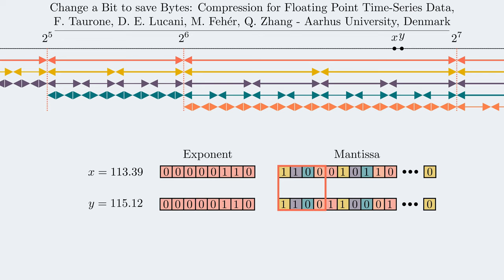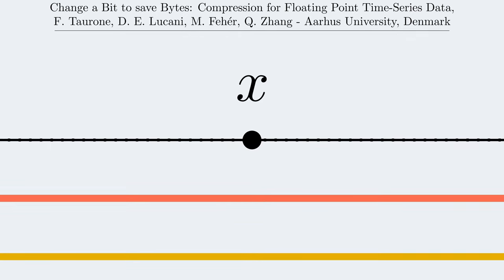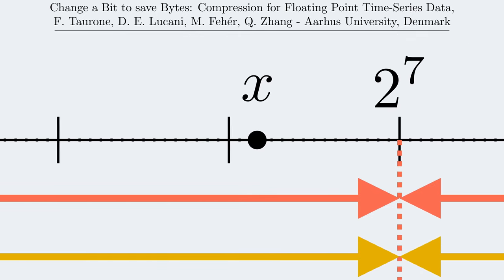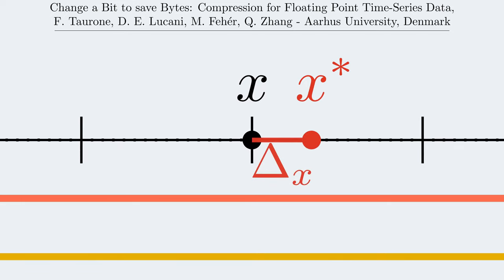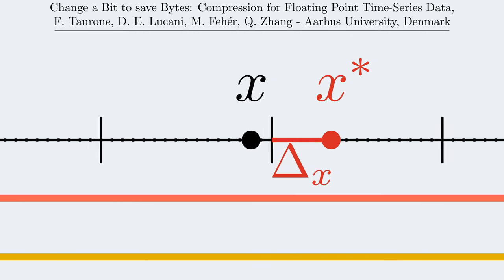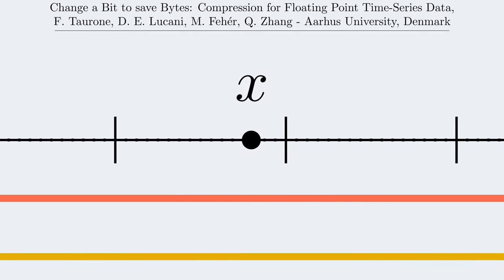The price to pay for these patterns to appear is the introduction of losses in the process. In fact, the result of the addition needs to be approximated to the closest representable floating point number, introducing an error. The same happens when we want to retrieve the original number with the corresponding subtraction.